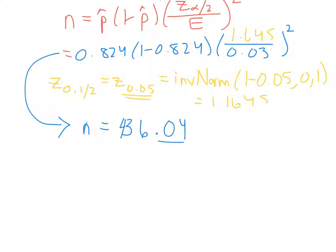But we can't interview 0.04 of a person. So remember, we round up. So it's actually 437. So the sample size is 437 Americans. And that's what we would need to get 90% confidence within 3 percentage points.